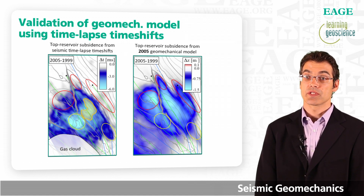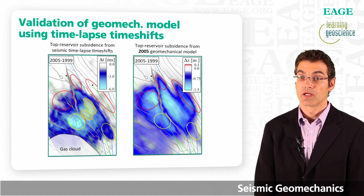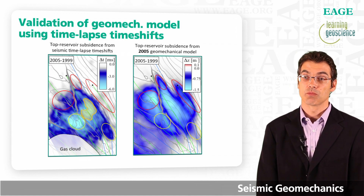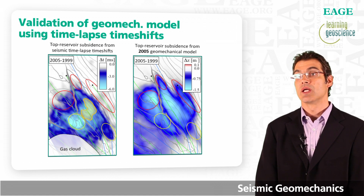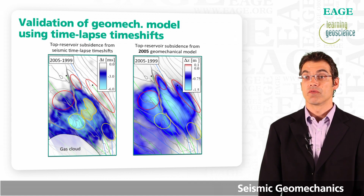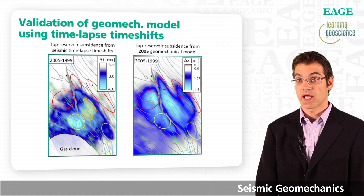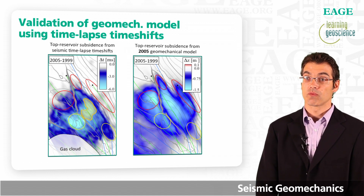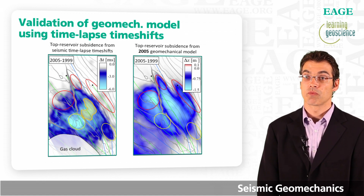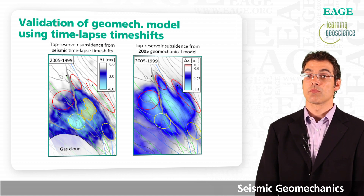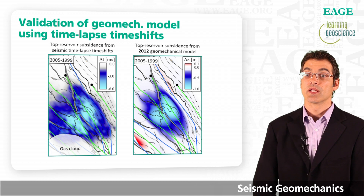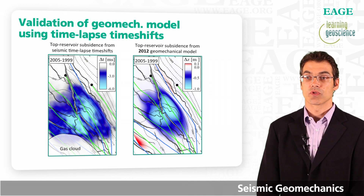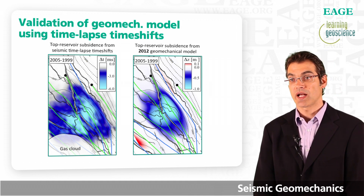Conversely, in areas outlined in yellow, large amounts of compaction are observed but not predicted by the geomechanical model. Since the first geomechanical model was built in 2005, 3D AVO inversion became available, more reservoir studies were done, and a better chalk compaction model was derived from rock mechanical testing data. With that information, a new geomechanical model was built in 2012. The 2012 model better predicts the observed compaction — demonstrating how time-lapse seismic data is used to validate and iteratively improve the geomechanical model.